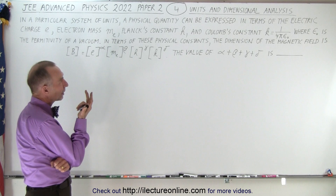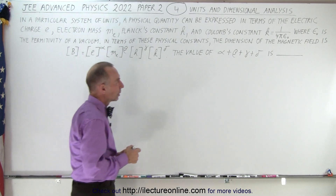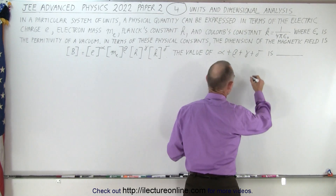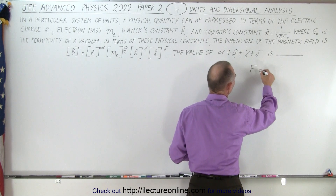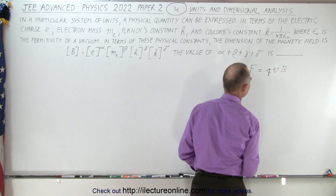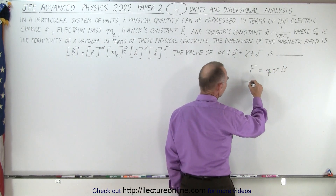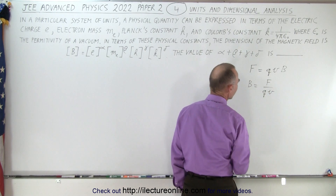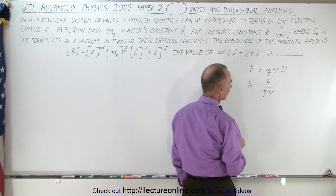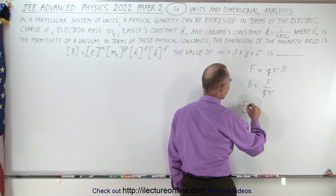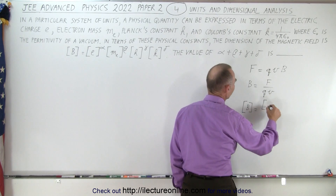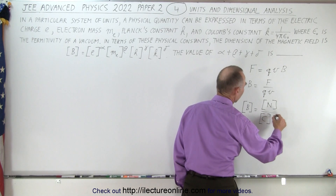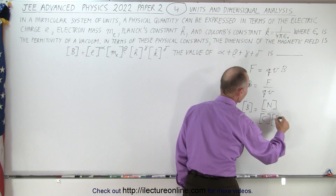For the magnetic field, I thought of an equation that involved it: the force on a charge moving in a magnetic field is equal to QVB, which means the magnetic field equals force divided by Q times V. F is the force, Q is the charge, V is the velocity. So the units of the magnetic field equal the units of force — newtons — divided by the units of charge (coulombs) and velocity (meters per second).